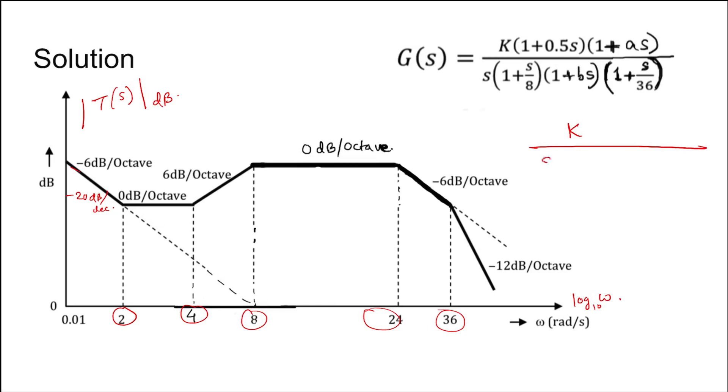We have a +20 dB per decade change in slope at 2, so writing in time constant form it means it has a zero here. Again here we have +20 dB per decade, so zero here.